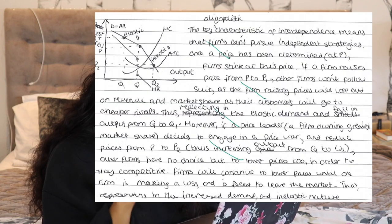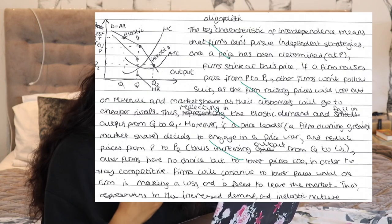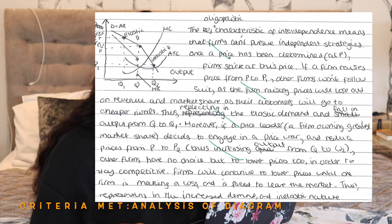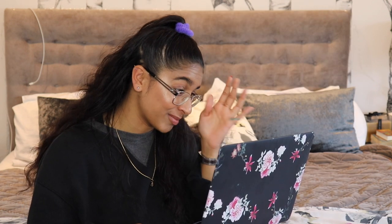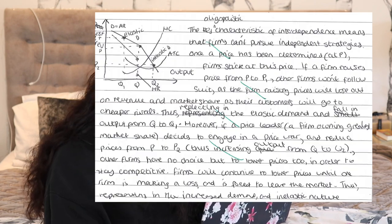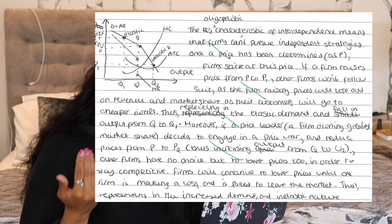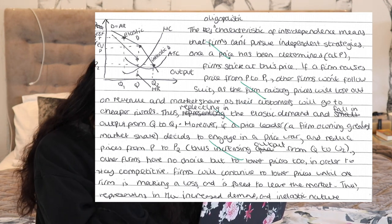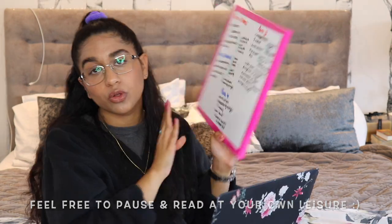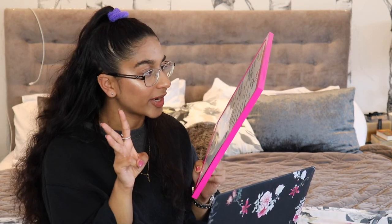Paragraph three: 'The key oligopolistic characteristic of interdependence means firms can't pursue independent strategies.' I explain this in depth: 'Once a price has been determined at P' — referencing the diagram I drew. By the way, do not draw your diagrams as small as I drew mine — make sure your diagrams take up at least half a page. 'Moreover, if a price leader' — in brackets: 'a firm owning the greatest market share' — I've shown extra understanding of that key term by defining it within the paragraph.